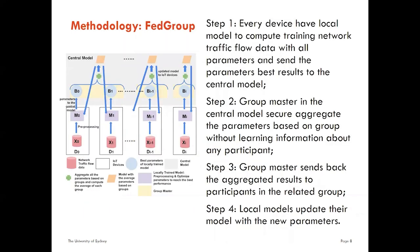Methodology. This graph shows the architecture of our proposed approach, Federated Group. We have four steps in total. Step one: every device has a local model to compute training on network traffic flow data with all parameters and sends the best result to the central model. Step two: the group master in the central model securely aggregates the parameters based on group without learning information about any participant. Step three: the group master sends back the aggregated result to participants in the related group. Step four: local models update their models with the new parameters.